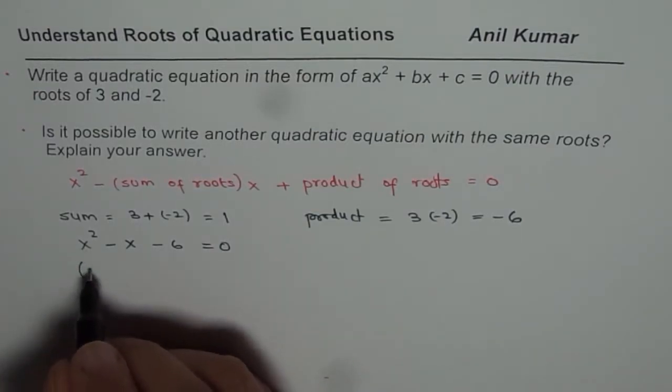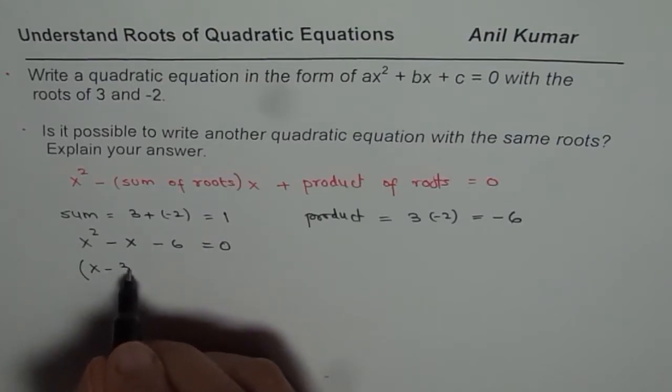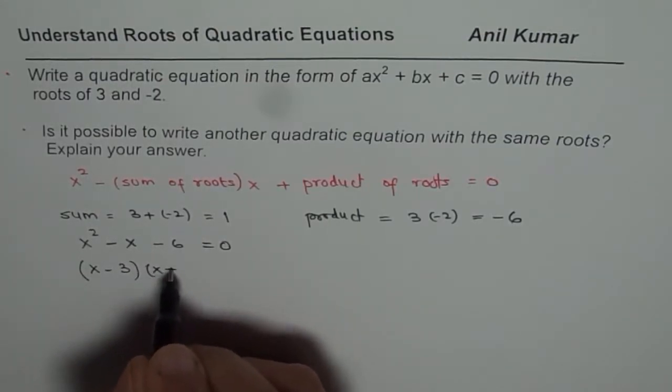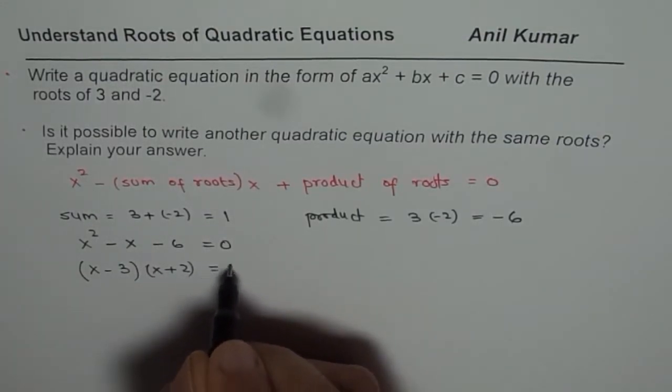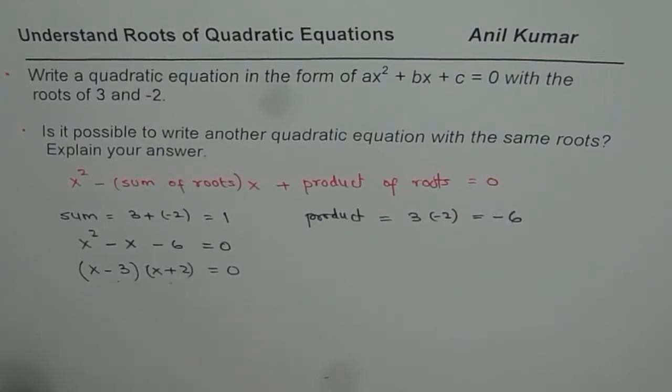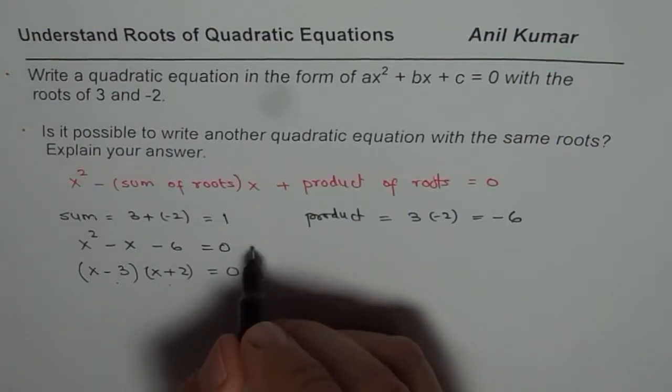And therefore, we could factor this as (x - 3)(x + 2) = 0. That means the roots are 3 and -2 for this standard equation. So that is our answer.